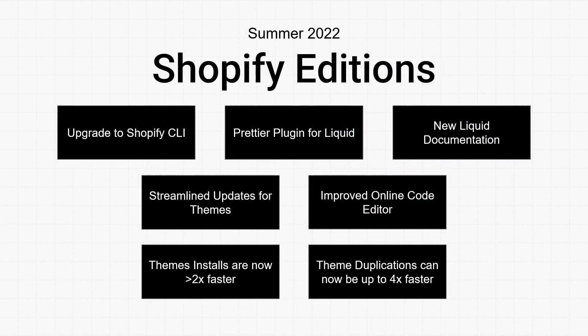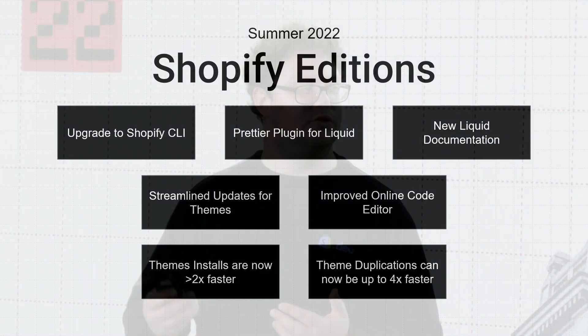Now let's talk about how we're going to get there. I don't have enough time to go into all the details of every announcement from Shopify Editions, but I'll highlight a few of specific relevance to theme developers. We had an update to the Shopify CLI, we launched the Prettier plugin for Liquid built into the extension for VS Code, and we streamlined and updated our Liquid documentation. We also made improvements to the merchant experience of working with themes by streamlining the update process — removing a lot of manual work, and providing faster installation and duplication with themes.